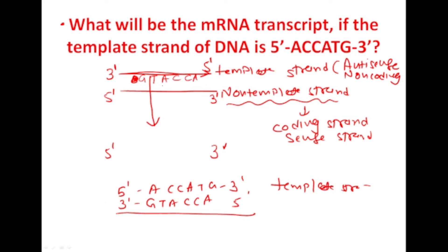Now here RNA polymerase will transcribe it to the 5' to 3'. So against G it is C, against T it is A, against A there is U, against C there is G, against C it is G, and against A there will be U. This is our mRNA transcript.